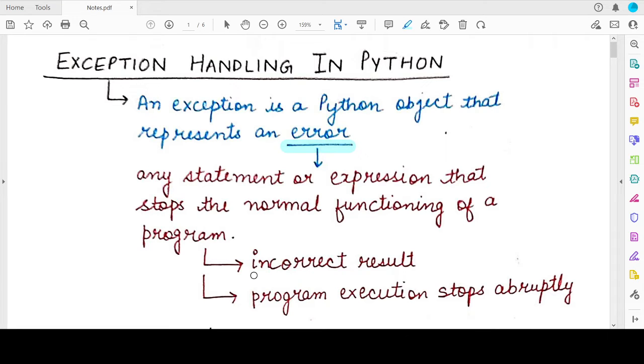So you expected the program to give a certain result but the result came out to be incorrect or the program suddenly stopped, abruptly stopped while executing and you did not know why the program behaved in this manner. So these are the situations when errors occur.